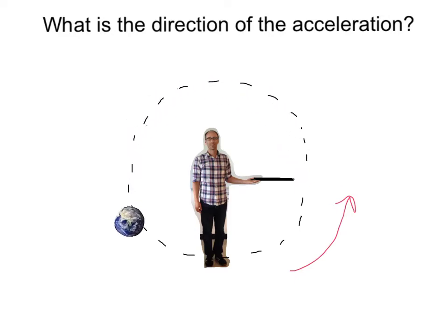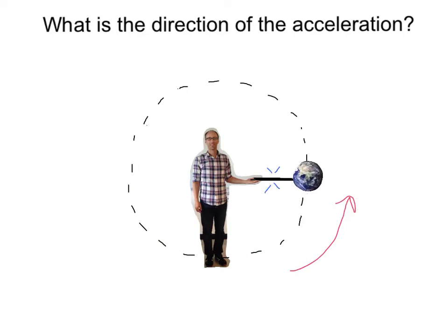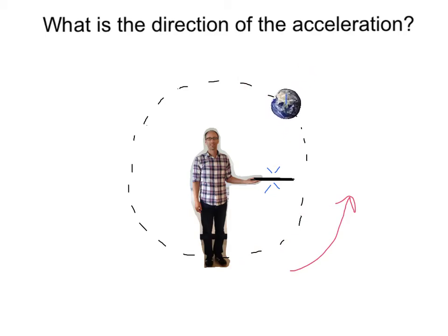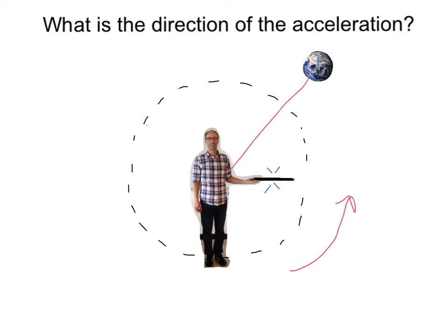Now that we know the world is accelerating on the string, what is the direction of that acceleration? Let's think of it as the world going around the string and the string breaking right when it gets here. We saw earlier that the world will just keep going in a straight-line path. But if the world ends up off the circle, what direction should I pull it to put it back? Putting it back on the circle means pulling it towards the center. So at every point on this circle, I'm constantly pulling inward — towards the center.